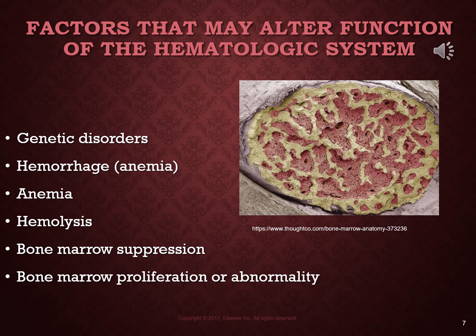Anemia is a problem with different kinds having different causes. There is iron deficiency anemia, folic acid deficiency anemia, pernicious anemia which has to do with vitamin B12, and chronic blood loss — for example, from an ulcer or GI malignancy where people lose blood through their stool without realizing it. Aplastic anemia is a disorder of the bone marrow. Renal disease can also cause anemia because, as mentioned earlier, it affects erythropoietin production.